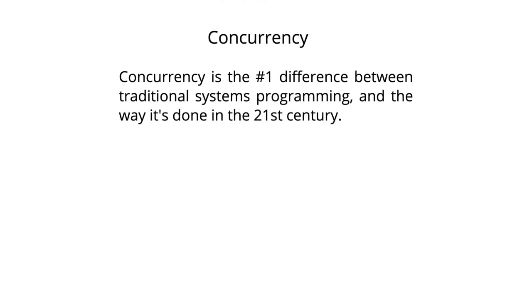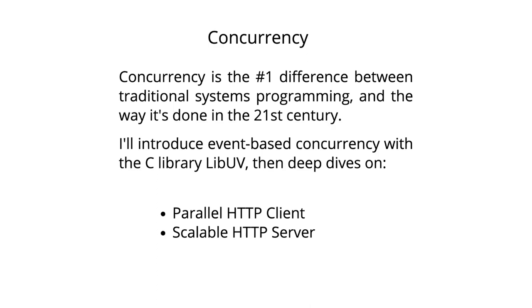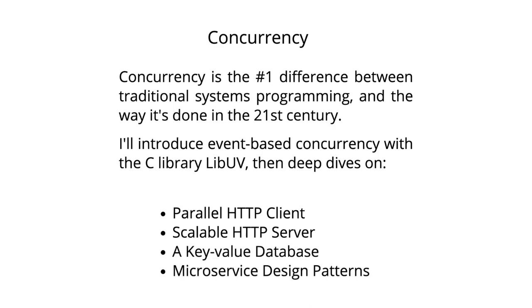But things get really exciting once we start writing concurrent programs that can handle the scale we expect from a state-of-the-art application. I'll show you how to implement event loop-based concurrency using the C library LibUV, and then take a deep dive on a few different domains: a massively parallel HTTP client based on libcurl, a scalable asynchronous HTTP server, a key-value database, and then we'll tie it all together into a microservice framework.